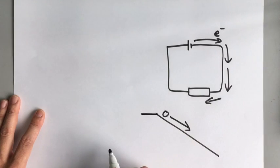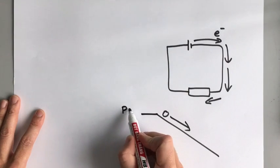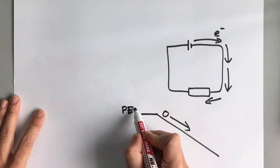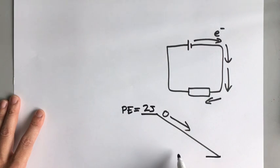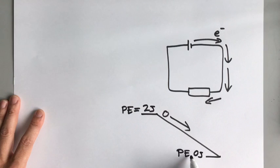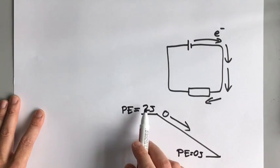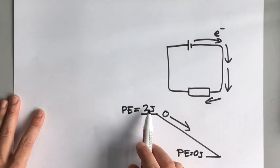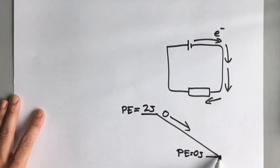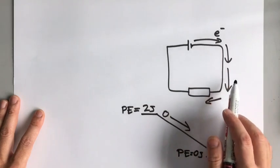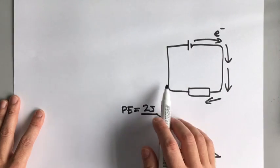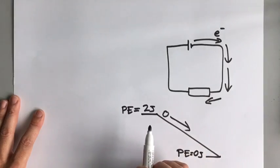So for the ball example, let's say there is a potential energy of two joules at the top and zero joules at the bottom. The ball has more potential energy up here than it does down here. In the same way, the electrons have more potential energy just as they leave the battery and less potential energy when they get back.